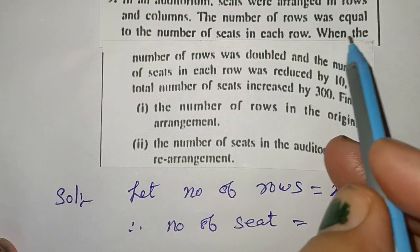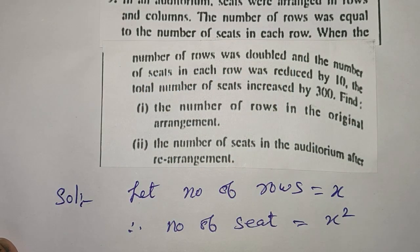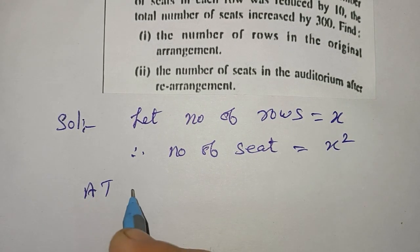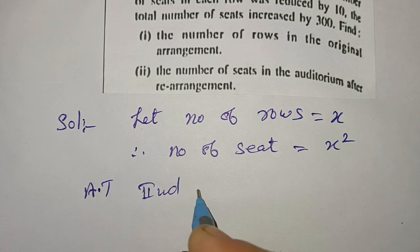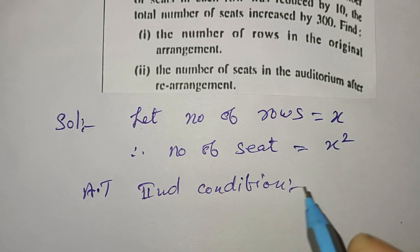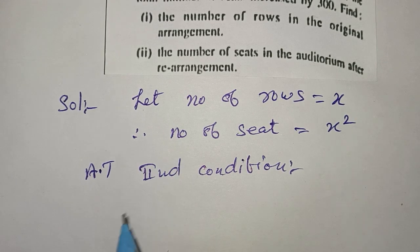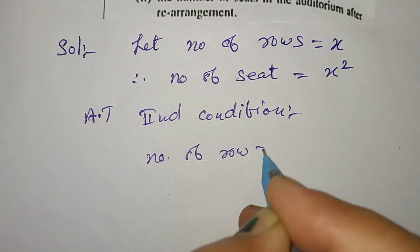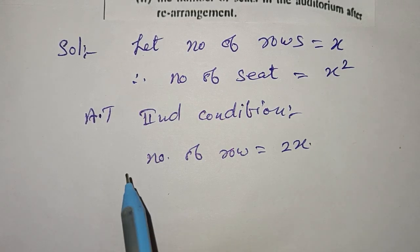Next, when the number of rows was doubled, according to second condition, number of rows: first x, now equal to 2x.